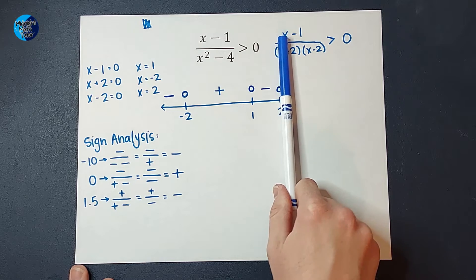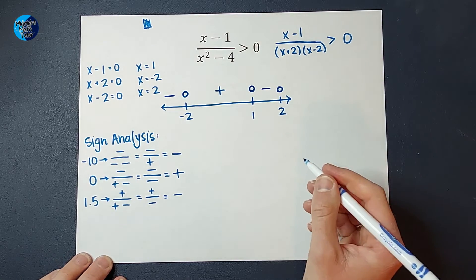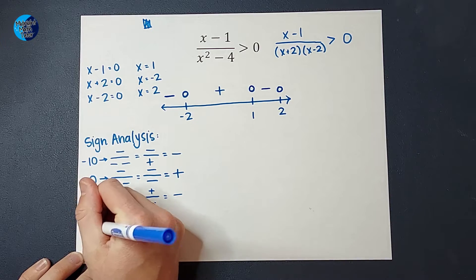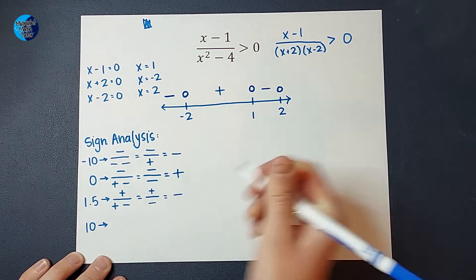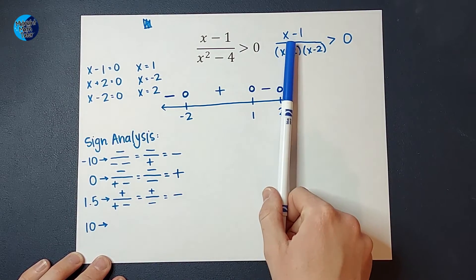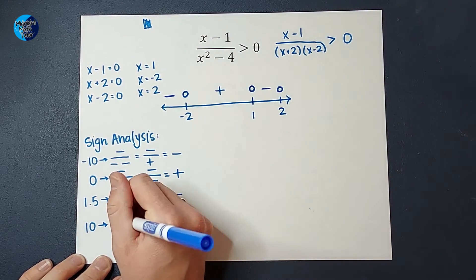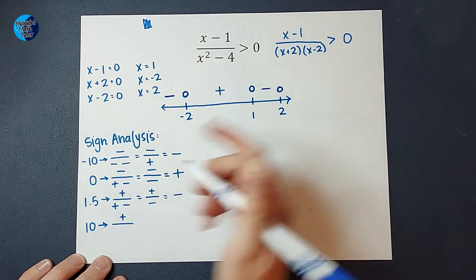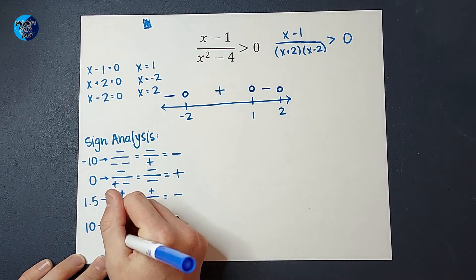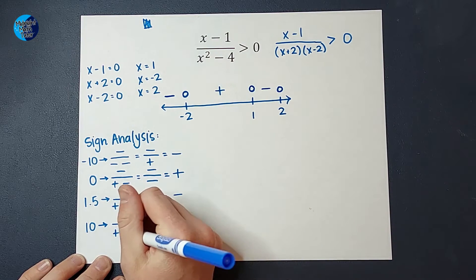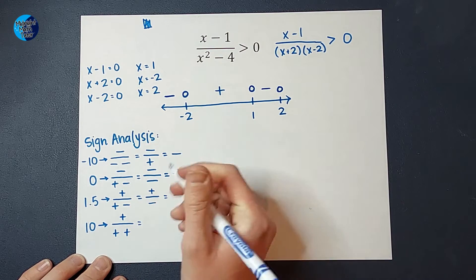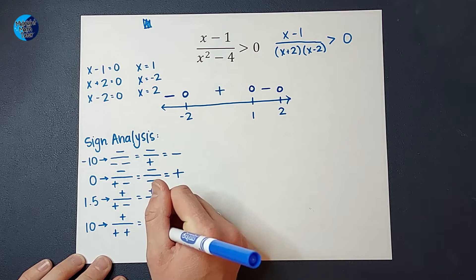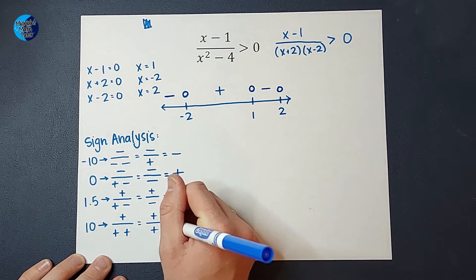Don't forget about over here to the right of two. I need a number bigger than two — let's just pick ten. When I plug in ten, I get ten minus one, which is positive. Ten plus two is positive, and ten minus two is positive. So on top I have a positive, and on the bottom I have a positive, so that's positive.